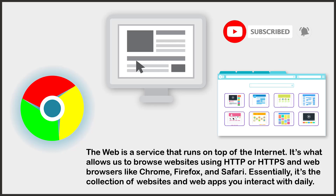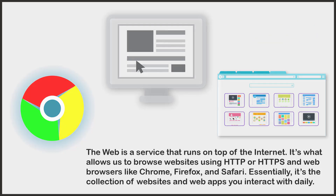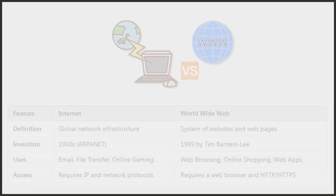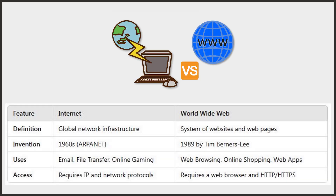Here's a quick comparison. By definition, the internet is a global network infrastructure, while the worldwide web is a system of websites and web pages. By invention, the internet originated in the 1960s, while the worldwide web was invented in 1989 by Tim Berners-Lee.